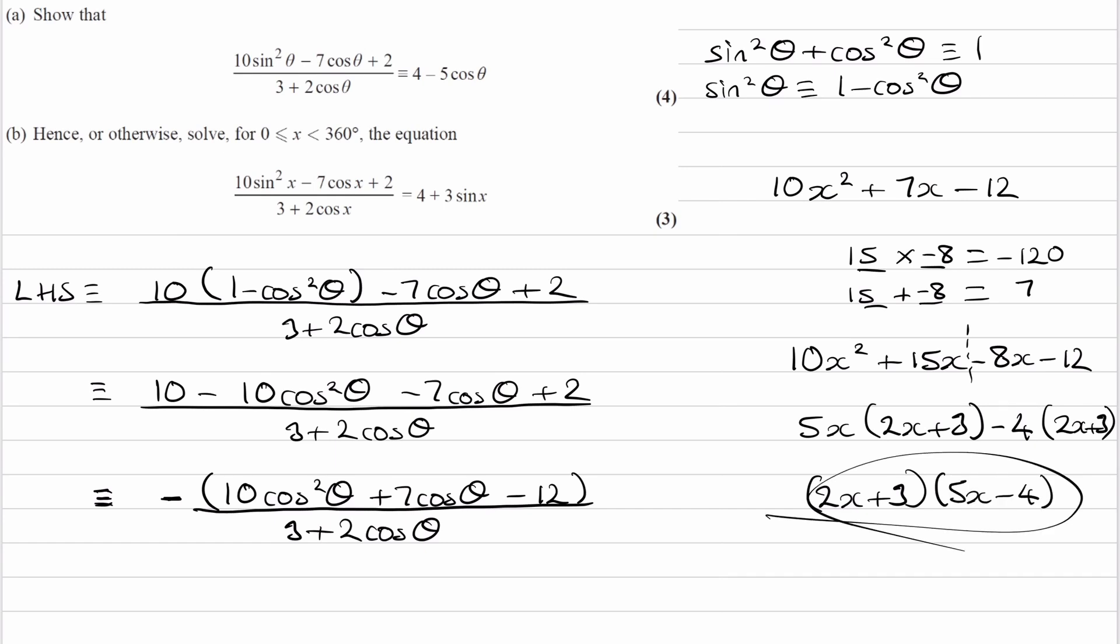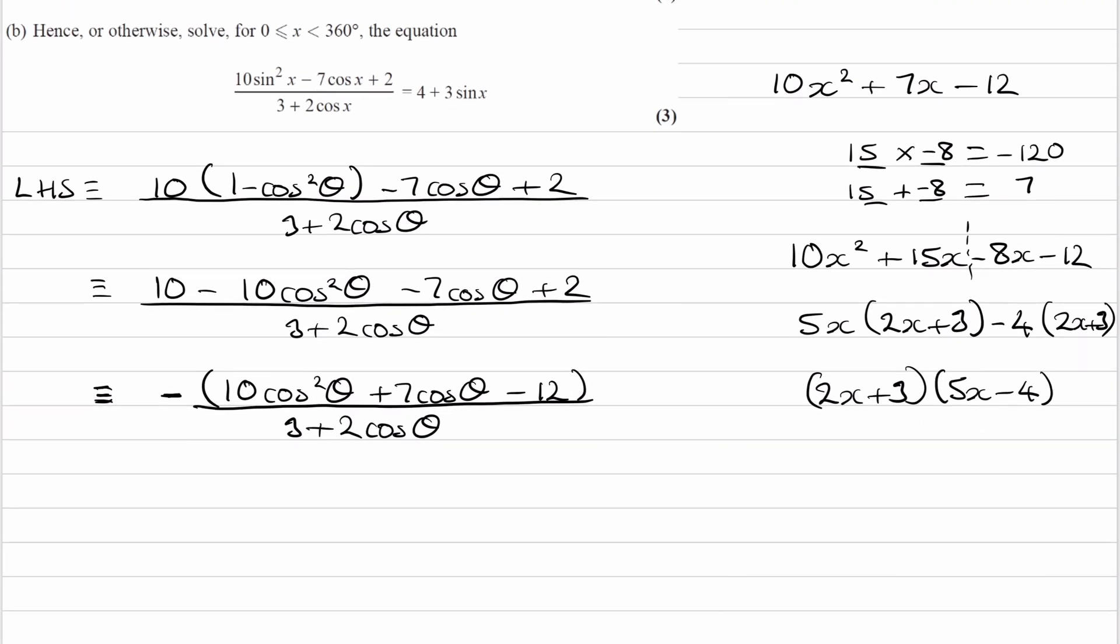So this is the factorized form of the numerator with x being cos theta. So let's now write this as minus brackets. So 2x plus 3, that will be 2 cos theta plus 3, as x is cos theta. And the 5x minus 4, 5 cos theta minus 4, all over 3 plus 2 cos theta. These two things are the same, so they cancel out. This is just written the other way around.